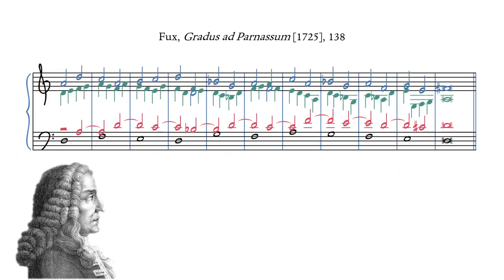Fuchs himself, for example, ends the section on counterpoint in Gradus ad Parnassum by showing this example of combined species. Each voice moves in a different species relationship to the whole notes of the Cantus firmus, which occurs in the bass. Unfortunately, Fuchs does not explain how to compose such an exercise.